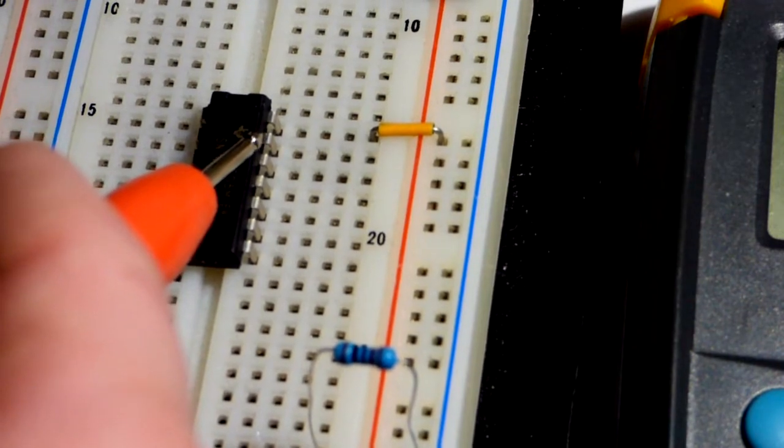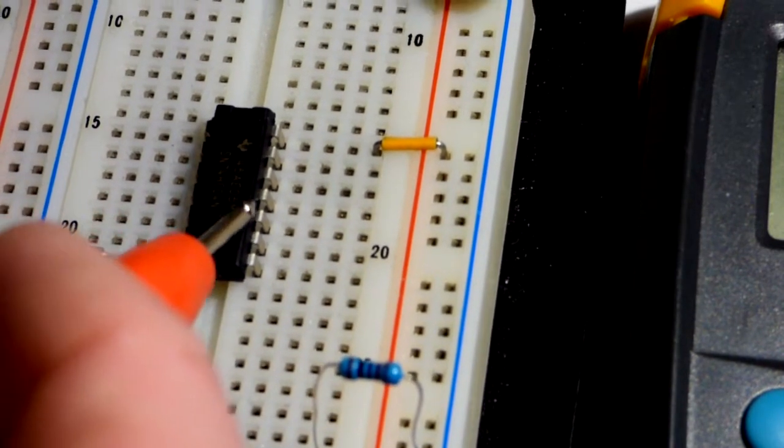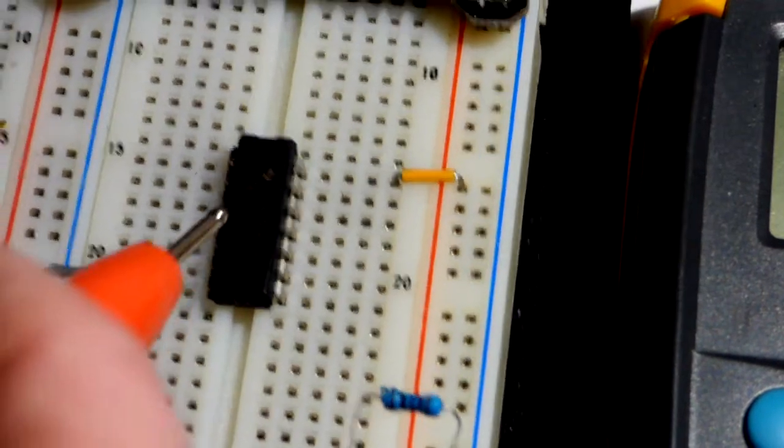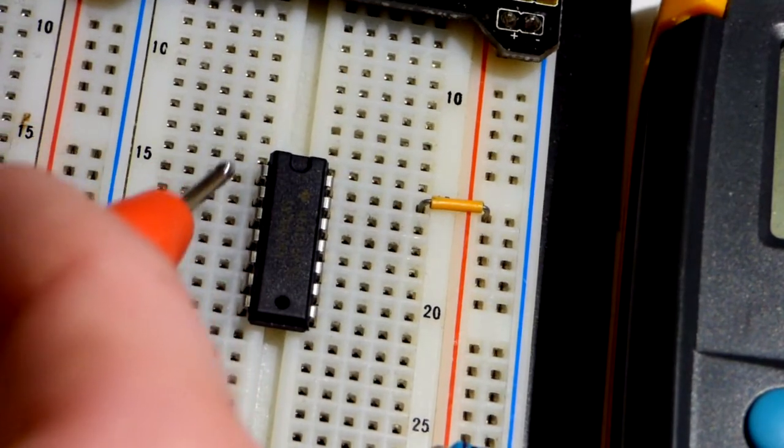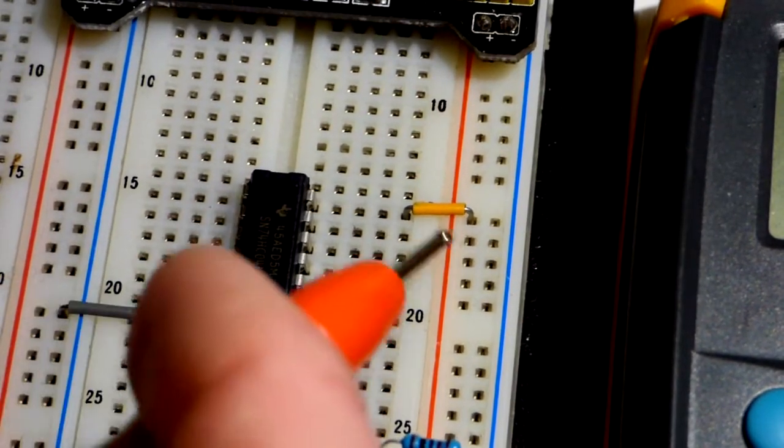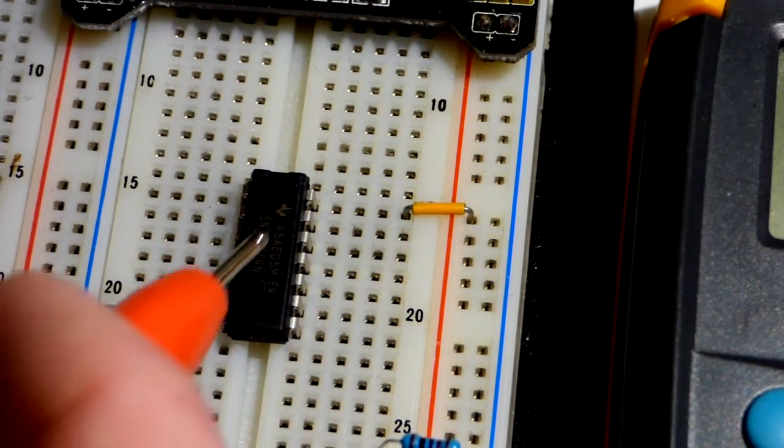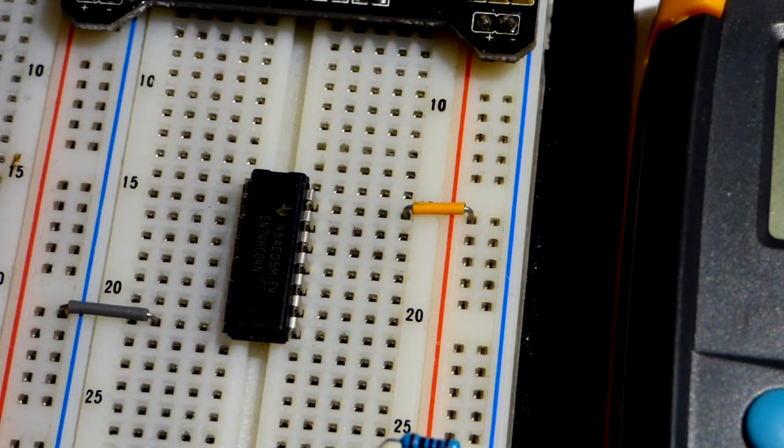We have an input, output. Input, output. And input, output. So there's 6 of them. The input is above the output. Once you have the power supply pins, it's pretty easy to narrow down which one is which.